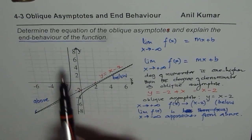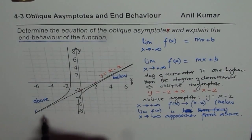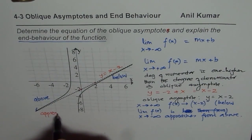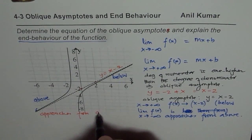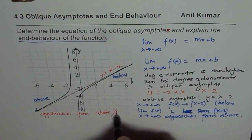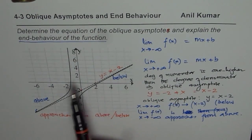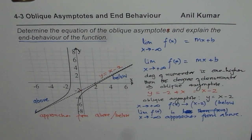Whenever we are talking about behavior near the asymptote for an oblique asymptote, we want to see whether the function approaches from above or from below. That is what end behavior near the oblique asymptote means. I hope that point is clear. Thank you and all the best.